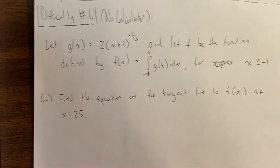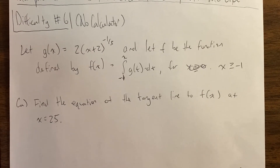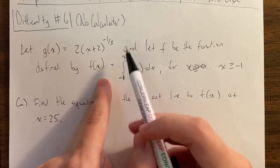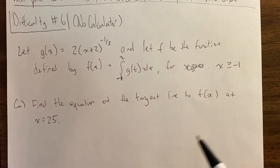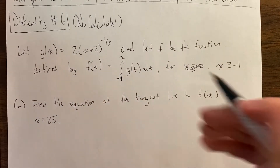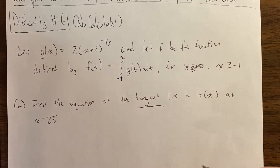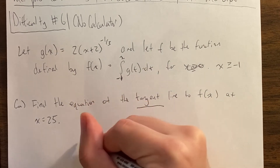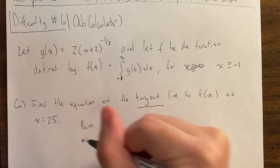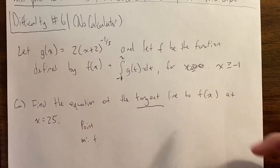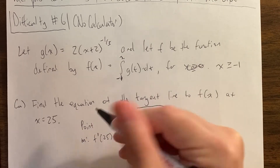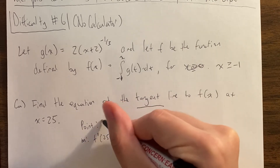The first question is, of course, find the equation of the tangent line. Notice that the tangent line is of f, but g is defined here. For every tangent line we need to find a point and a slope, where the slope is, of course, the derivative. So we want to find f prime of 25 and then we also want to find f of 25.